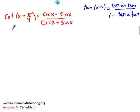So what we basically have is 1 minus the tangent of the first term, which is x, times the tangent of the second term, which is pi over 4. We're going to put that over,